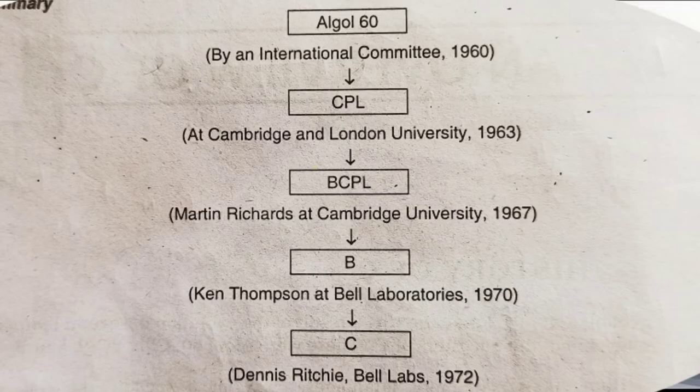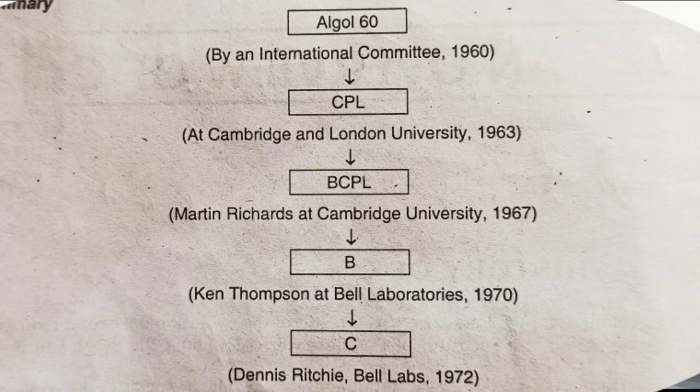Let's talk about the history of C language. The first languages were low-level. First came ALGO 60, created in 1960 by an international committee. Then CPL — Combined Programming Language — in 1963. Then BCPL in 1967. Then the B language, created by Ken Thompson at Bell Laboratories in 1970. Then C language was created by Dennis Ritchie to build an operating system in 1972.